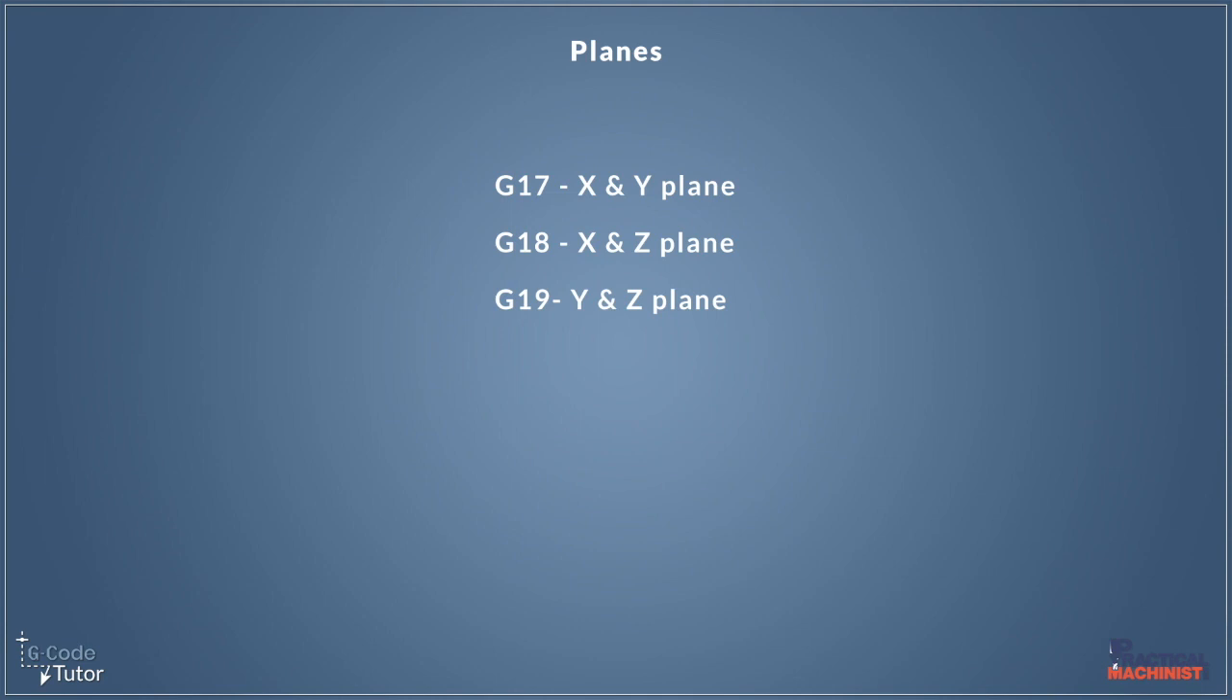So we've got three planes to choose from. We've got G17, which is our X and Y plane, our G18, which selects our X and Z plane, and the G19, which is the Y and Z plane.